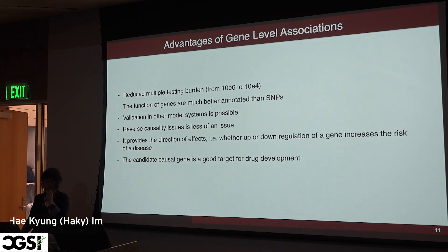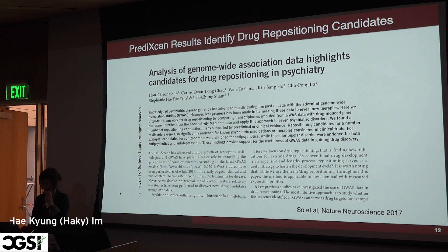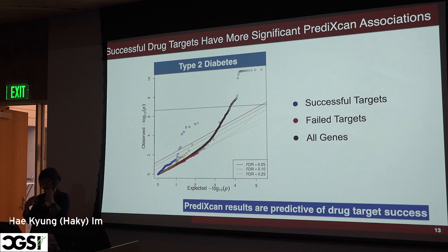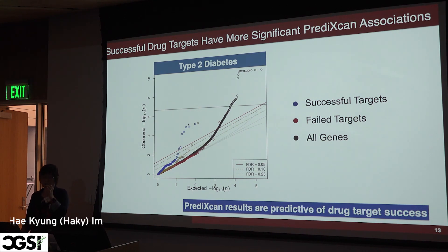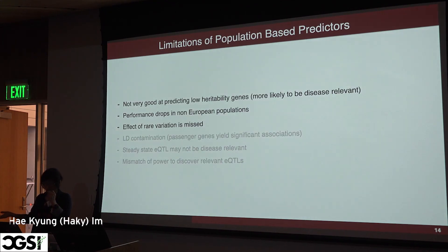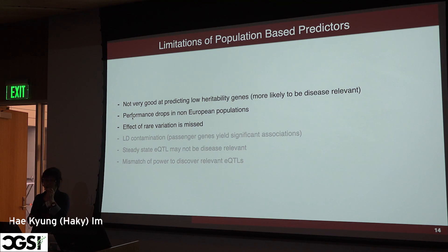There are many advantages to gene-level associations — I'll skip that slide for time. There are also proofs that these methods are useful for identifying drug repositioning candidates; genes that are targets of historically successful drugs tend to be more significantly associated according to this approach — the PrediXcan or more generally known as TWAS associations. Of course there are limitations of these population-based predictors: we're not very good at predicting low-heritability genes, performance drops for non-European populations because most training data are from European populations, and effects of rare variation are completely missed.